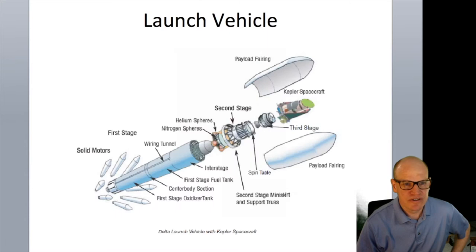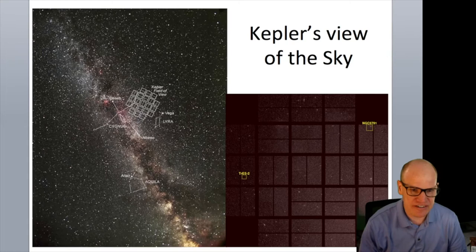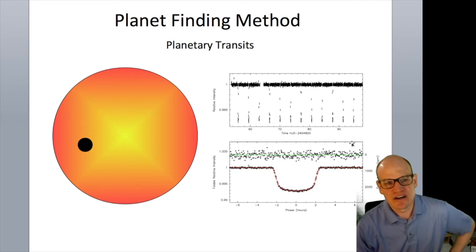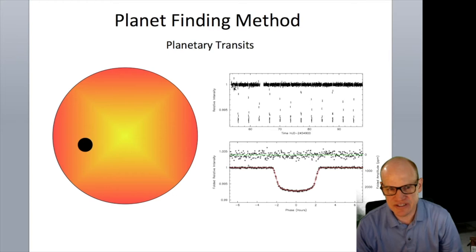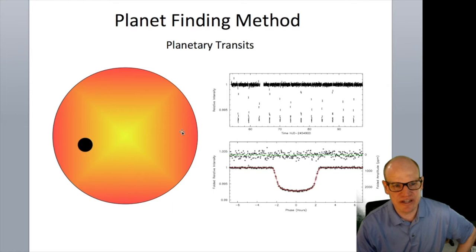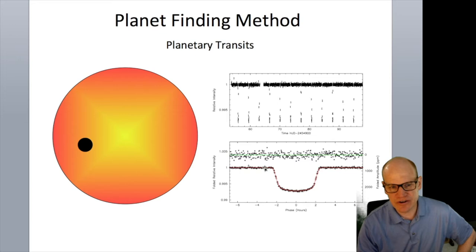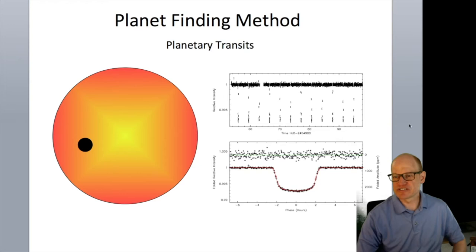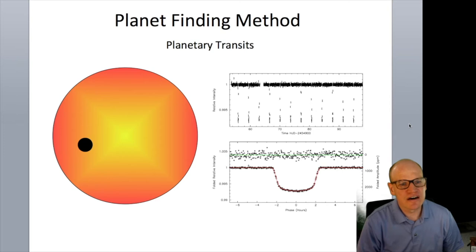The plan was to observe for four years. Kepler identifies planets by monitoring star brightness every 29-and-a-half minutes continuously. When a planet passes in front of the star, it blocks a portion of the light — the star dims. The next time the planet passes, another dip occurs, and these are stacked to build a light curve showing relative brightness in and out of transit.